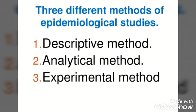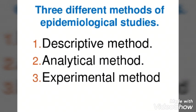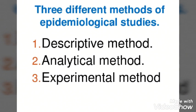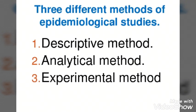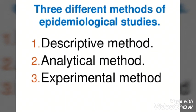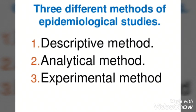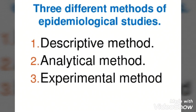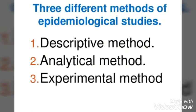Descriptive means you are going to describe. Whenever you select any area and do a community survey, you describe who, when, where, and how many. For example, if you are doing a survey on any disease condition, you will assess where it is occurring, how many people are involved, and how it occurred. In analytical studies, you try to find out how and why. In experimental studies, you conduct an investigation — you take samples and test them to know the exact cause.